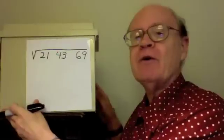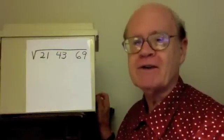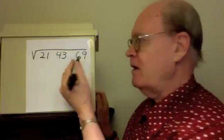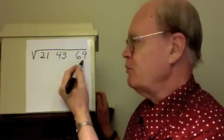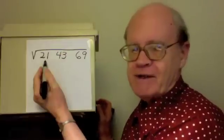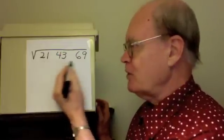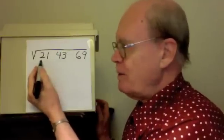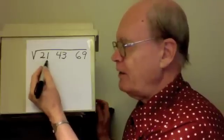We will be finding the square root of 214,369. I have lined up the numerals in groups of two starting at the right. There are six numerals here. If there were five numerals, I would have two here, two here, and the remaining one here.